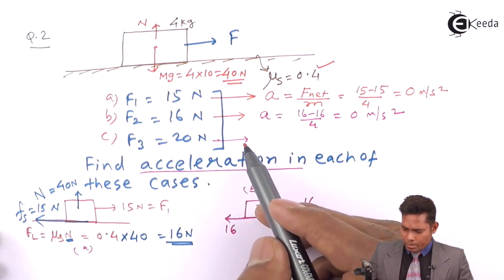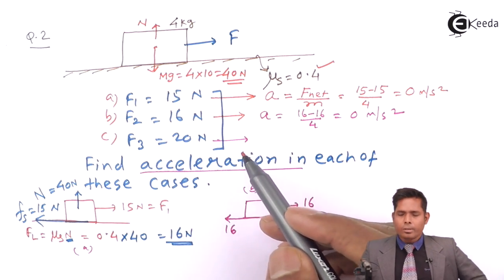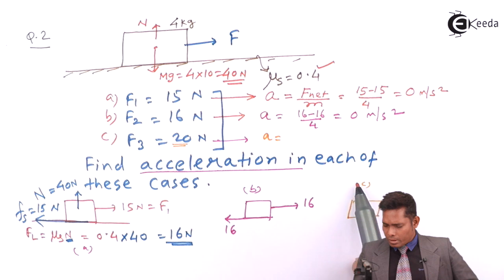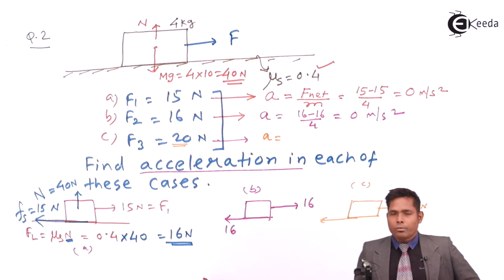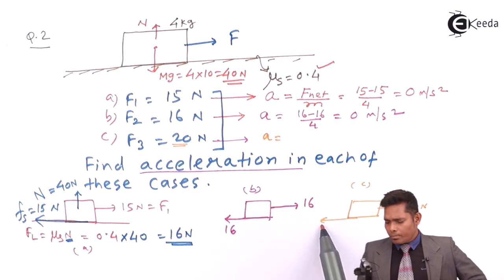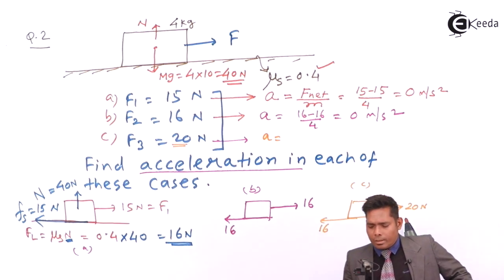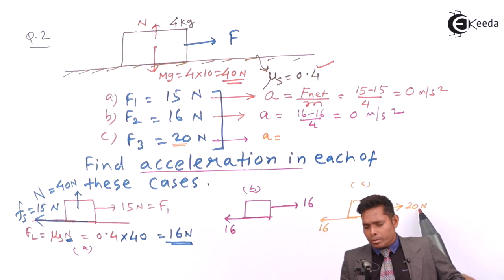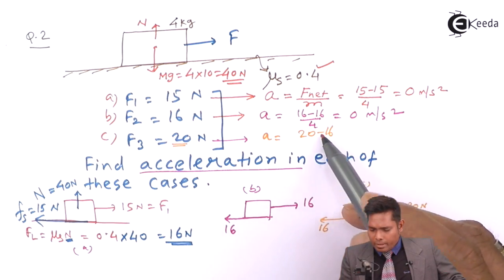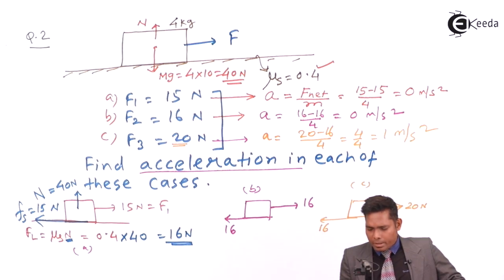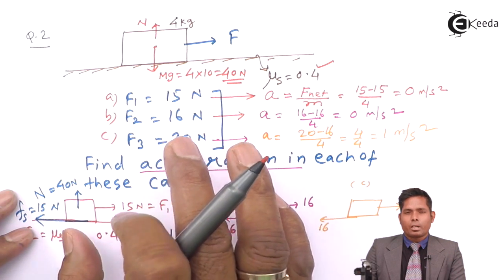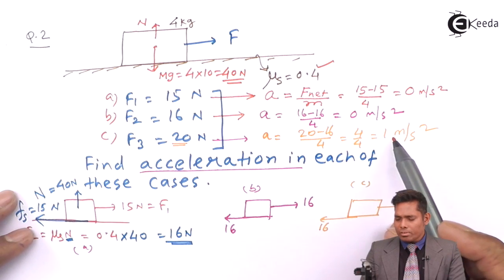Now for the third case, Case C: acceleration = net force / M. When the force applied is 20 N, the applied force has exceeded the maximum value of limiting friction. So friction gives its best of 16 N, and the applied force is 20 N — there will be a net force. The net force is 20 − 16 = 4 N towards the right. Therefore, acceleration = 4 / 4 = 1 m/s². When the force is 20 N, the body starts moving with an acceleration of 1 m/s².